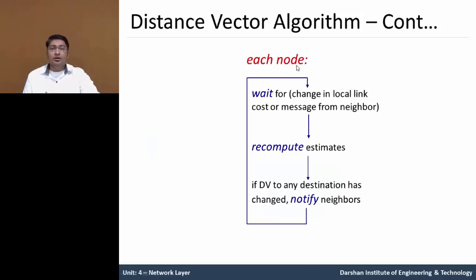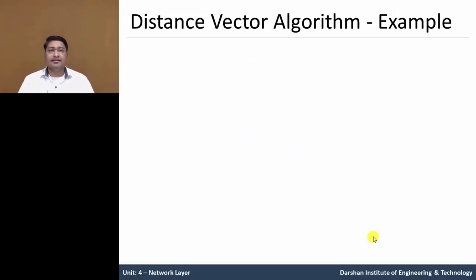It is better to understand this algorithm through an example. Each node waits for a change in its local link cost, or a return message from a neighbor. It then recalculates the estimated value, and if the distance vector to any destination has changed, it notifies its neighbors that the value has changed and sends updates to all other neighbors.